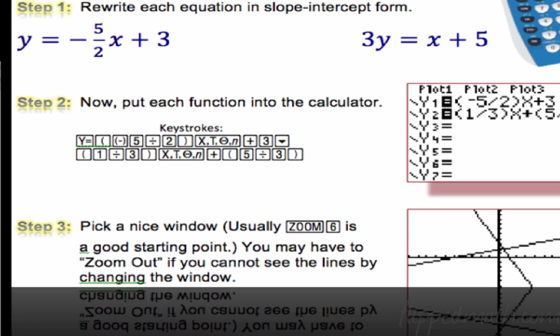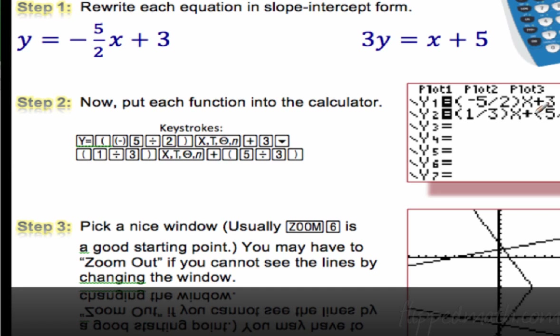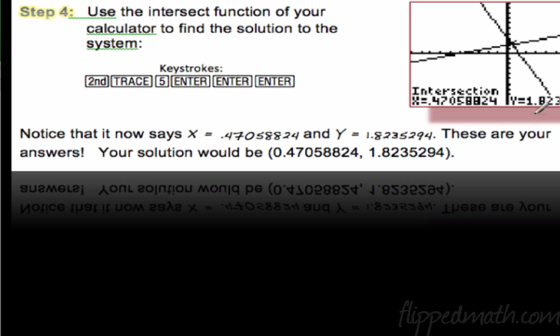After you write them in slope-intercept form, you hit Y=, and then put both equations into the calculator. Make sure you put parentheses around the fractions. Then hit Zoom 6. Zoom 6 will place the window from negative 10 to 10 on x and negative 10 to 10 on y — usually that's a good starting point. After that, you'll probably see the lines intersect. The last step is we use the intersect function of the calculator to find the solution.